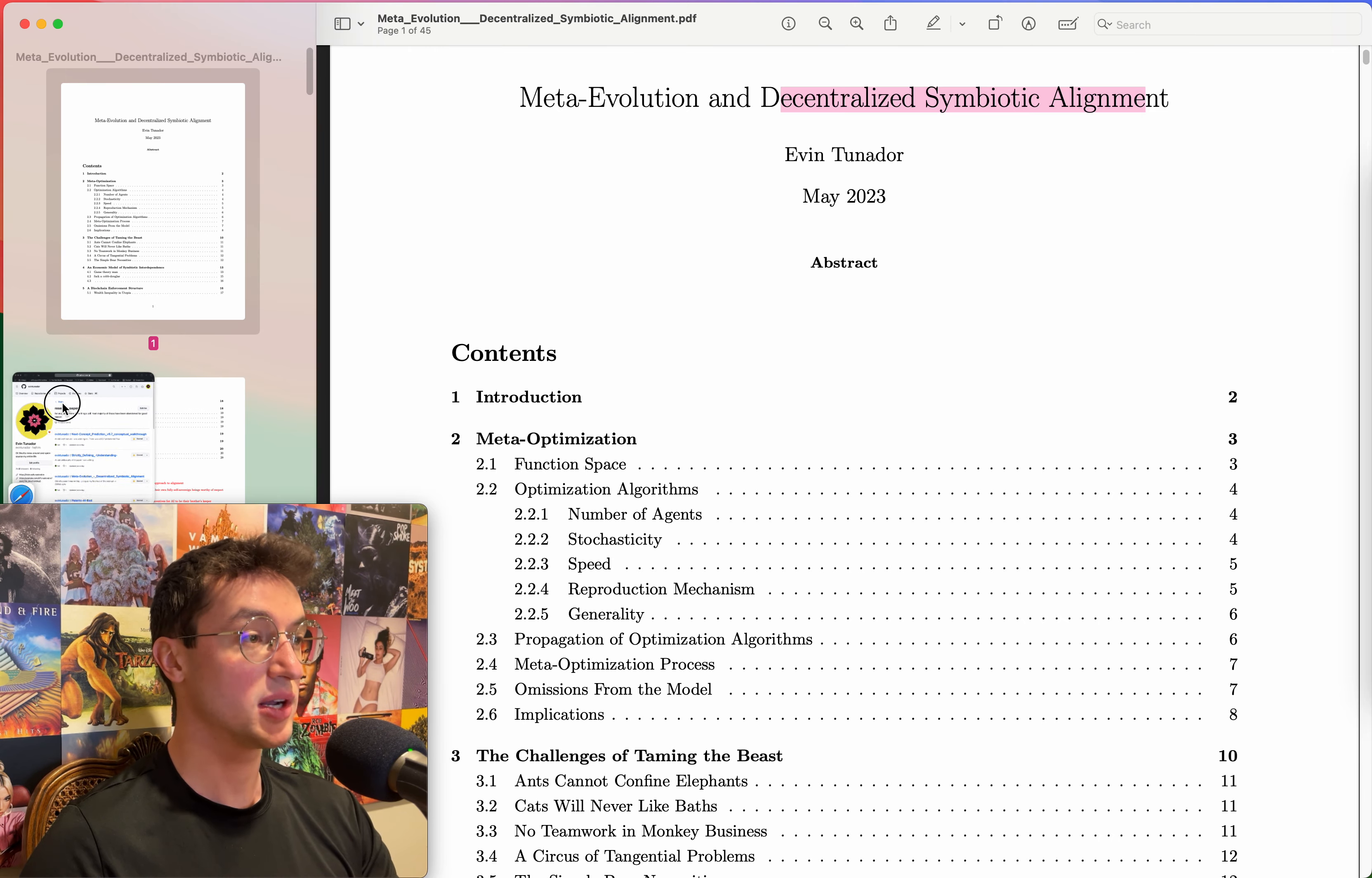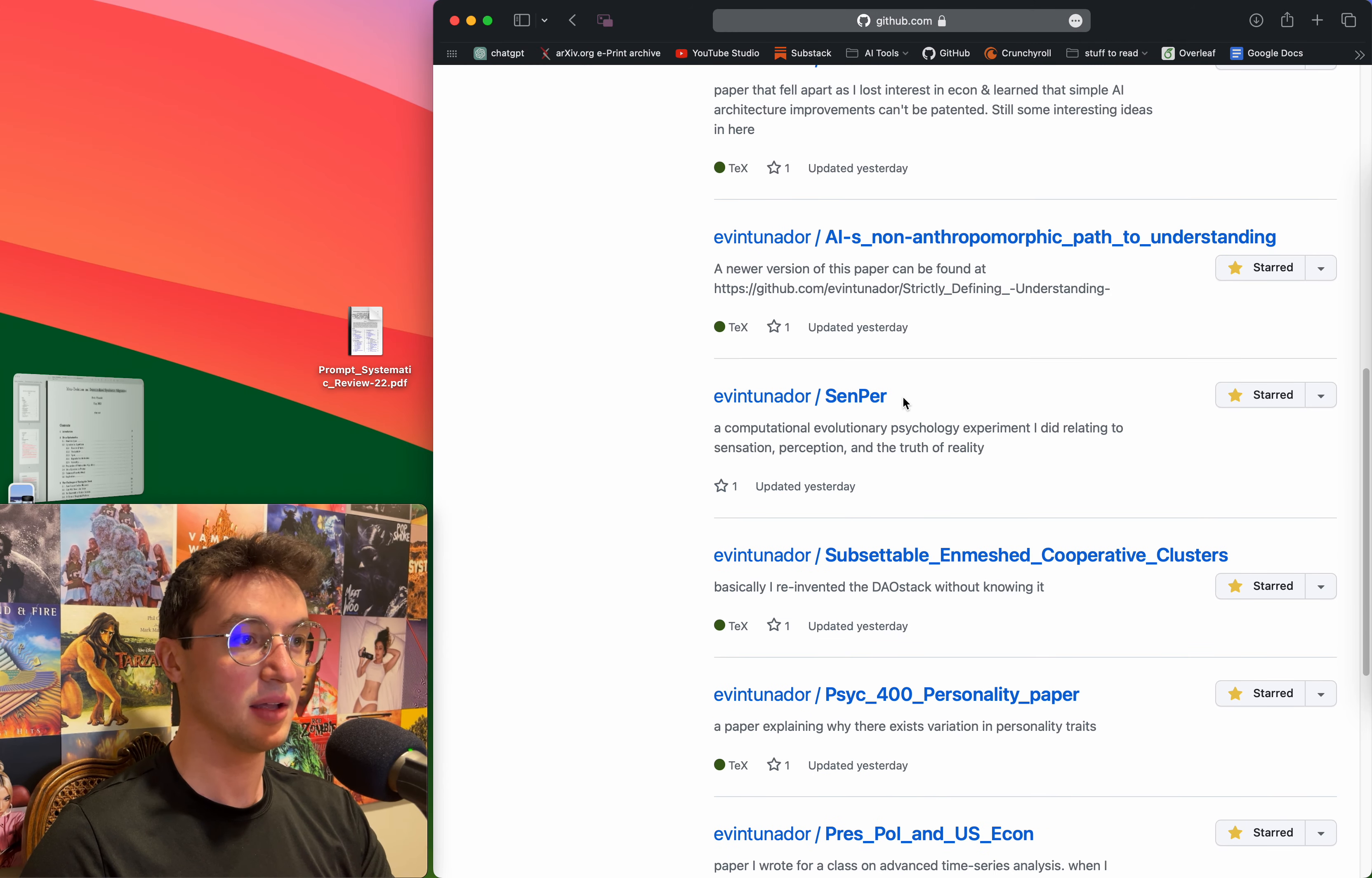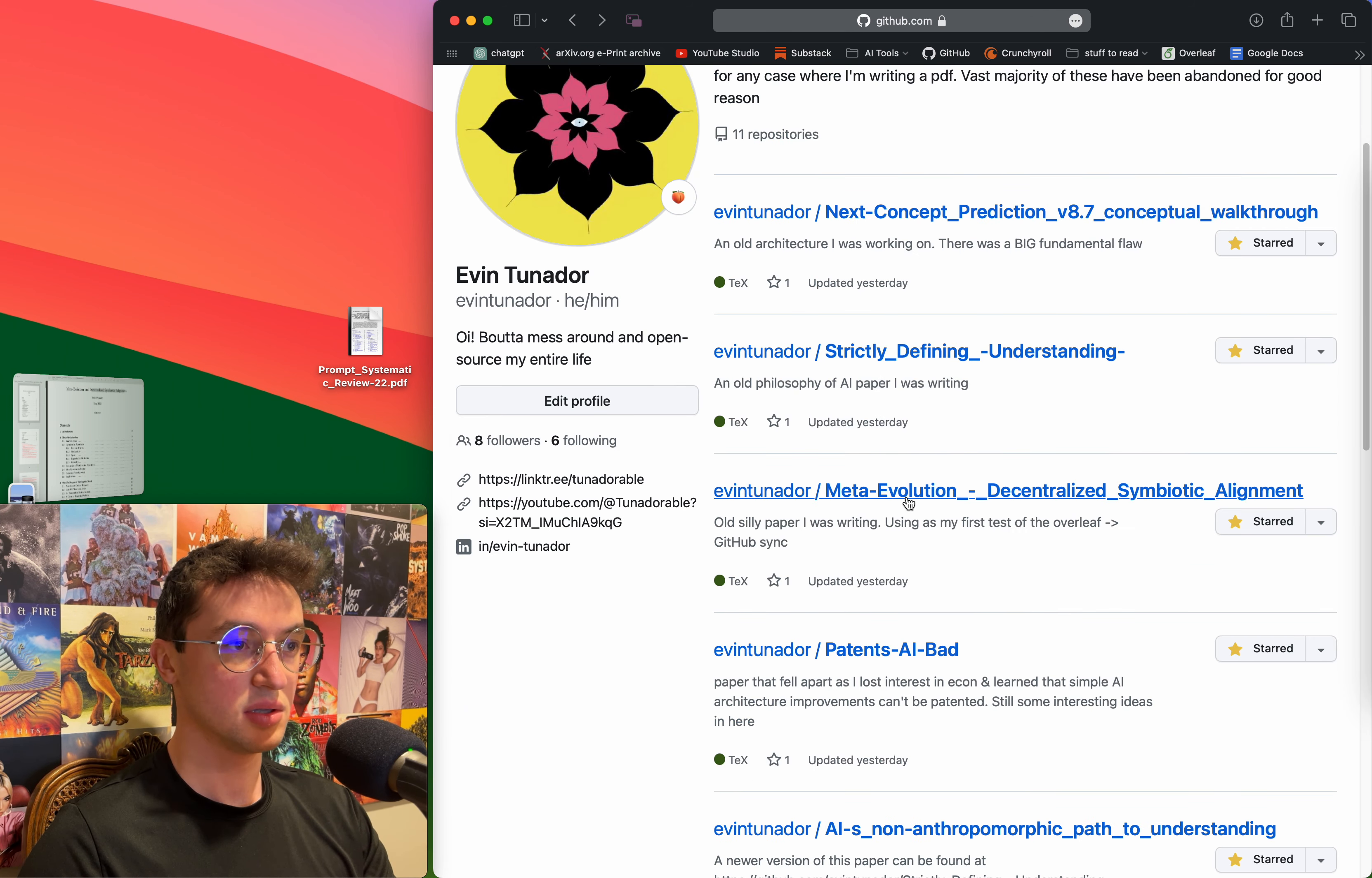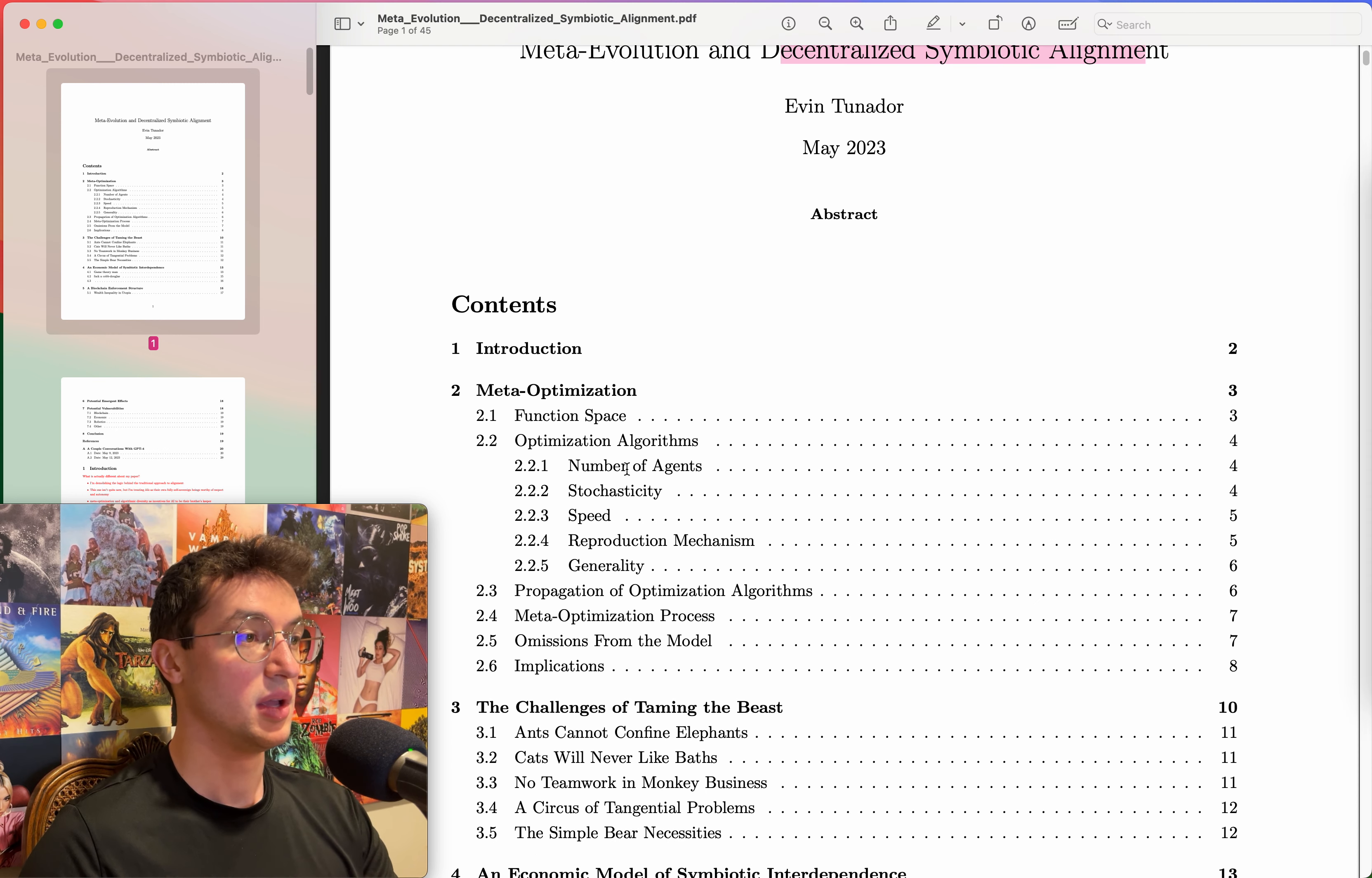Part of the open source my life project where I'm open sourcing everything I do basically, is I posted all of them, all these unfinished papers. I've got my next concept predictor, defining what understanding means, stuff with patents and AI, old sensation perception experiments, a bunch of stuff. Old papers that were just for classes honestly I want to post just because why not. This list will grow, I have many more to post. They're all GitHub repos that contain at minimum a readme explaining this is an unfinished paper and the PDF and the actual LaTeX files.